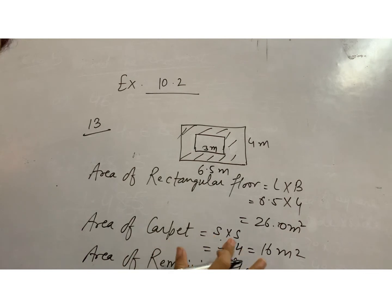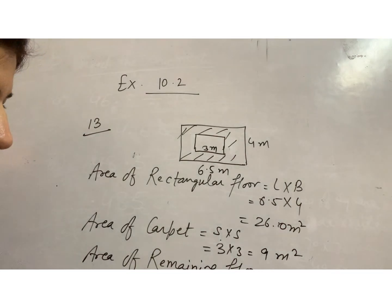Here we have side 3, 3 into 3, 9 meter square. So area of remaining floor, 26 minus 9, which is 17 meter square.